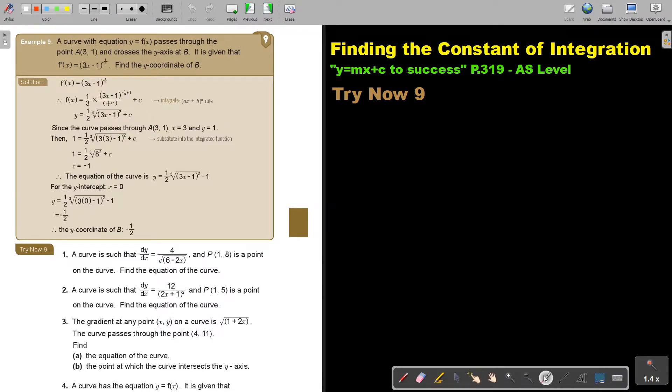Let's look at another example. A curve with equation Y equals F(x) passes through the point and crosses the Y axis at B. It is given that this is the derivative function, the differentiated function. Find the Y coordinate of B. So it's actually almost the same, it's just that we are going to use now the reverse of the chain rule, that Ax plus B to the power of N.